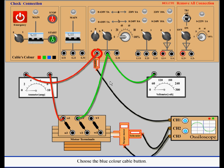Choose the blue color cable button. Connect L22 to W1. Connect L32 to the other terminal of the ammeter.